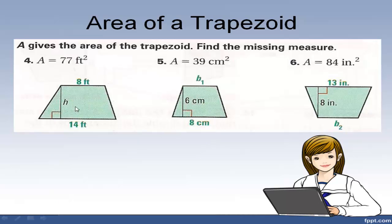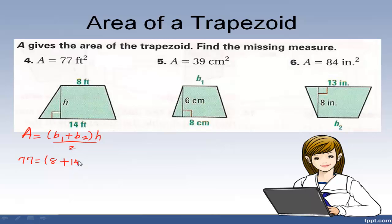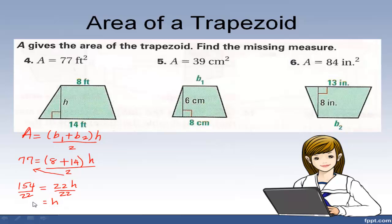Here I have three examples. I suggest you hit pause right now and do these on your own, then play the video and check your answers. For the first one, write your formula: Area is b sub 1 plus b sub 2 times the height over 2. Plugging in: 77 equals 8 plus 14 times h. Cross multiply: 77 times 2 is 154, equals 22h. Divide both sides by 22, and h equals 7 feet.